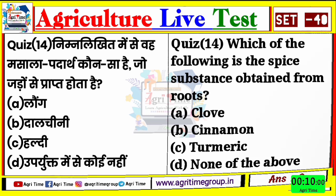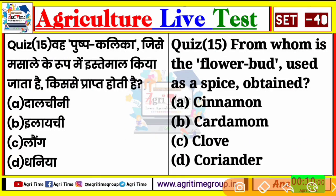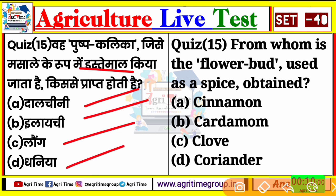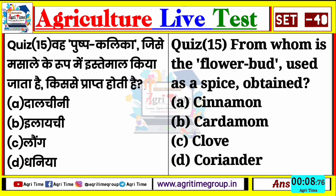Question number 15 यह रहा आपके screen पर - वह पुष्पकली का जिसे मसाले की रूप में इस्तेमाल किया जाता है, किससे प्राप्त होता है? From whom is the flower bud used as a spice obtained? Options देखिए: दालचीनी, इलाची, लॉंग और धनिया। Quiz 15 का right answer - जिनों ने भी C comment किया उनका answer right है। जो लॉंग है, यह पुष्पकली होता है जिसका प्रयोग मसाले की रूप में किया जाता है। Right answer quiz 15 के लिए option number C।